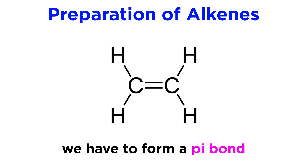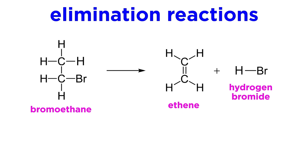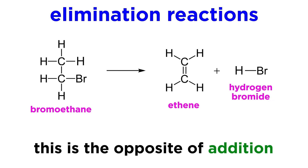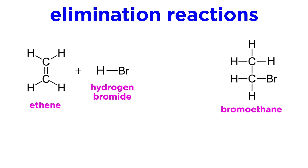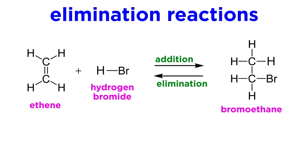In order to prepare an alkene we are going to have to form a carbon-carbon pi bond, and we briefly introduced one method of doing this a bit earlier. Elimination reactions are those in which two groups on two adjacent carbons are eliminated, replaced by a pi bond between those two carbons. This is the precise opposite of the addition reactions we have been discussing, where two groups are added to a pi bond. So if we put an alkene on the left and a substituted alkane on the right, we can see that the two arrows going in either direction between them will refer to addition and elimination.